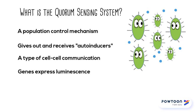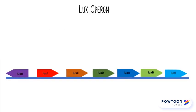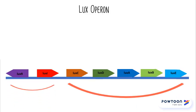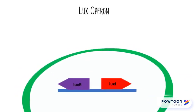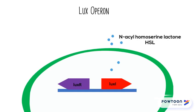On the transcriptional level, it is the LUX operon that controls this quorum sensing circuit. The LUX operon consists of five luciferase structural genes and two regulatory genes called LUX-R and LUX-I. The LUX-I gene encodes the synthase enzyme that produces the auto-inducer known as N-acyl homoserine lactone, or AHL. The LUX-R gene encodes the transcription factor that binds to the LUX operon, which is activated by these AHL auto-inducers.